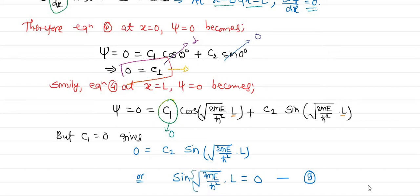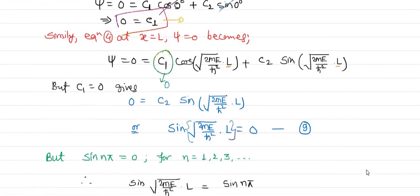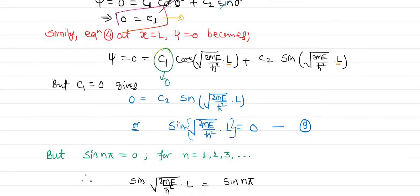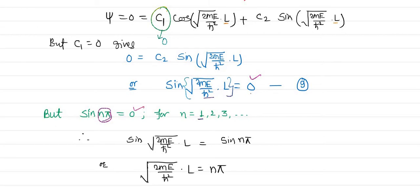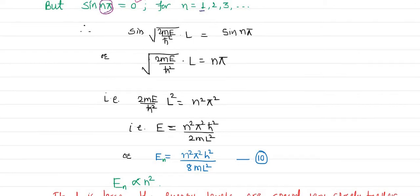We know that sin(nπ) = 0 for integer values of n. Since sin of some angle equals zero, and sin(nπ) = 0, these two angles must be the same. Note that n should not be 0 for the one-dimensional case, so n starts from 1. Taking sin inverse on both sides: √(2mE/ℏ²)·L = nπ. Rearranging, we can write the energy equation.